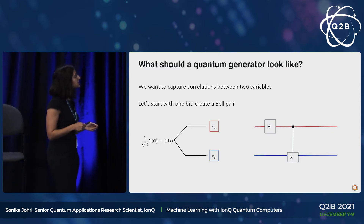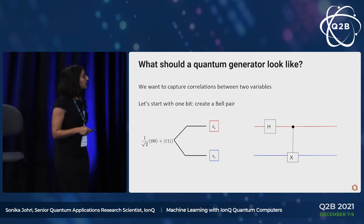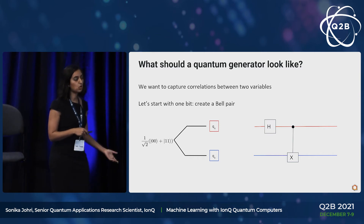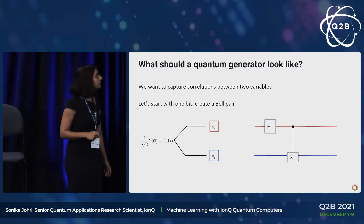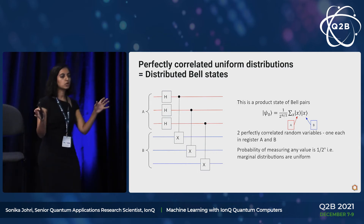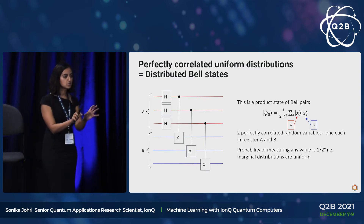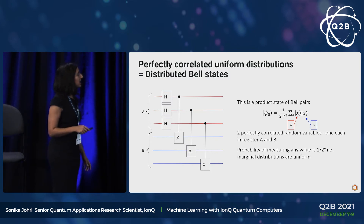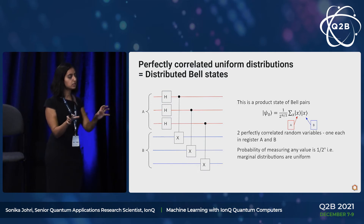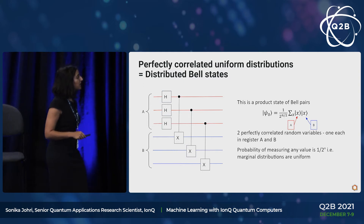What is the simplest correlated object in quantum mechanics? It's a Bell pair. We know how to create Bell pairs extremely easily on a quantum computer — all you need is a Hadamard gate and a CNOT gate. To model two random variables, you divide your qubits into two registers and create a number of Bell pairs spanning both registers. What that gives you is two perfectly correlated uniform distributions: whatever you measure in register A, you get the exact same result in register B.